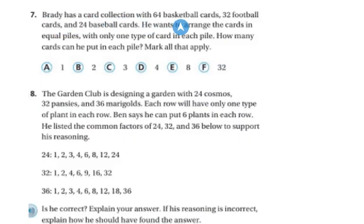Brady has a card collection with 64 basketball cards, 32 football cards, and 24 baseball cards. He wants to arrange the cards in equal piles with only one type of card in each pile. How many cards can he put into each pile? Mark all that apply. So on this one, what you're going to want to do is take your 64, 32, 24, and you're going to want to write all of the factors and then circle the ones they have in common.